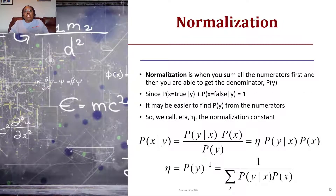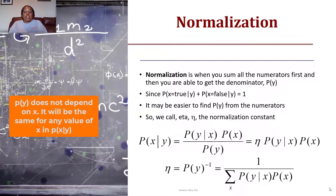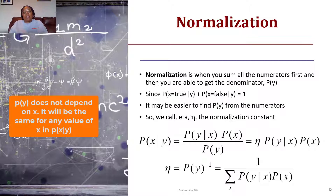From normalization, we sum those numerators first to get the denominator P(Y). We know the sum of the two numerator terms gives one because we only have two terms — X is true and X is false. So we define a normalization constant eta, which ensures the sum of our probabilities is one. We can rewrite Bayes' formula as P(X|Y) = eta · P(Y|X) · P(X), where eta = 1/P(Y) = 1 over the summation of P(Y|X)·P(X).